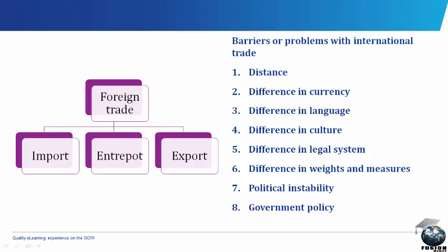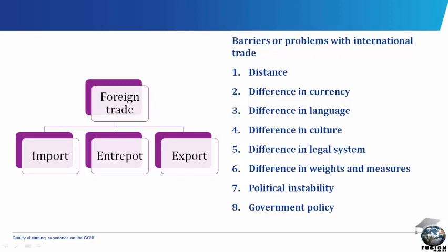Export trade is the act of selling goods and services to other countries. Some governments encourage exports by providing export subsidies. Exports can equally be divided into visible and invisible exports. Visible exports are goods that can be seen and touched, sold in overseas markets. In Nigeria, visible exports include cotton, palm oil, crude oil, textile, and cocoa. Invisible exports consist of services rendered to other countries, such as banking, insurance, transport, and consultancy services.